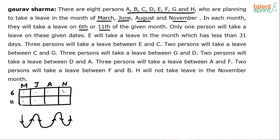You cannot go across columns; the sequence is March 6th, then March 11th, June 6th, then June 11th, August 6th, August 11th, November 6th, November 11th, and so on.